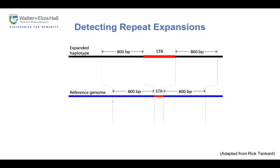I'll give a high-level description of how these tools work. Imagine we have an individual with an expansion — this is the black genome at the top — and below we have the reference genome shown in blue. There's an STR indicated in red, around 100 base pairs in the reference, but in the individual with the expansion, this is now three or four times the size. All these methods use paired-end sequencing and rely on anchor reads that align to the reference around the STR, and then analyze the STR content of the mate read.